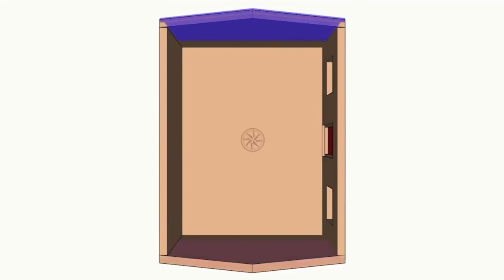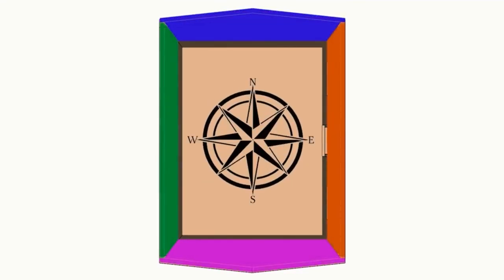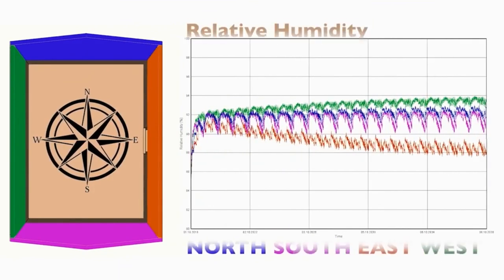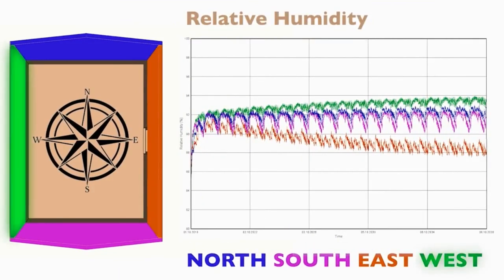The first step in this assessment is to run the model with no insulation to determine which area of the building has the higher inherent condensation risk, to establish which represents the worst case. If the upgraded structure is modelled using this element, it can be assumed the other less onerous elements will perform adequately. We can see from the graph here that the west elevation has the highest predicted relative humidity and therefore the highest risk of condensation occurring. So having established the worst case scenario, we can now move on to a more detailed assessment of the wall construction itself.